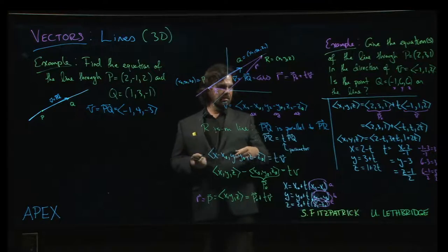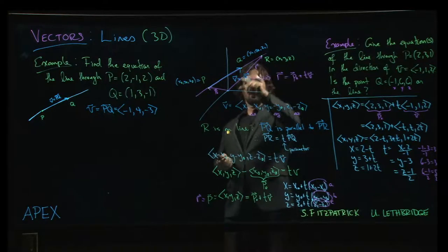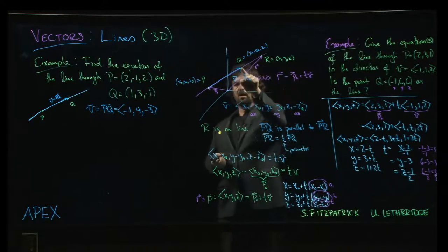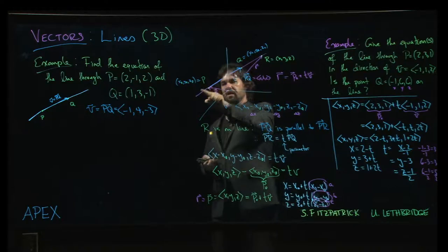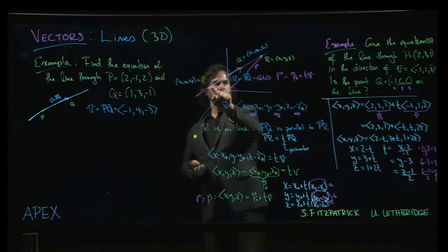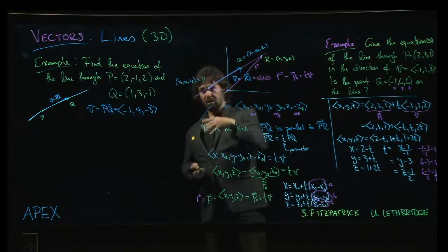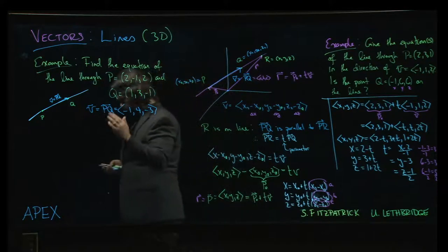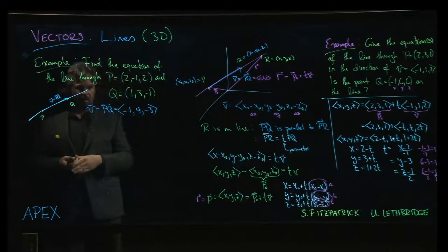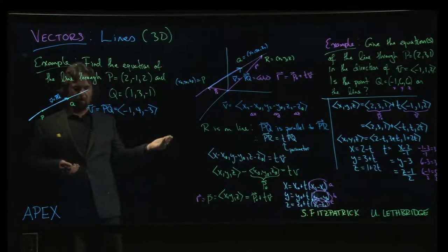All that happens is the vector points the other way. And all that really means is that to get to a certain point on the line, like that point r, if we're starting here and the vector points the other way, well, now we'll need a negative value of t rather than a positive value of t, because the vector points in the other direction, and so your parameter changes sign.